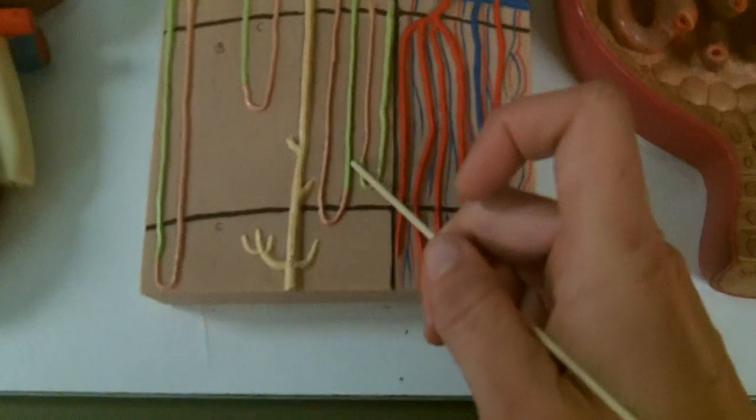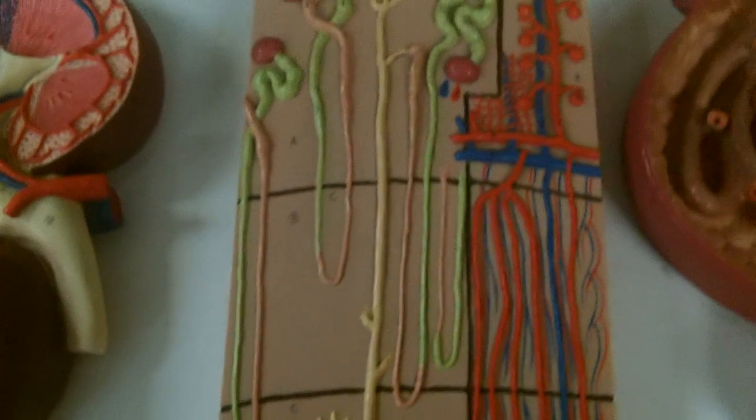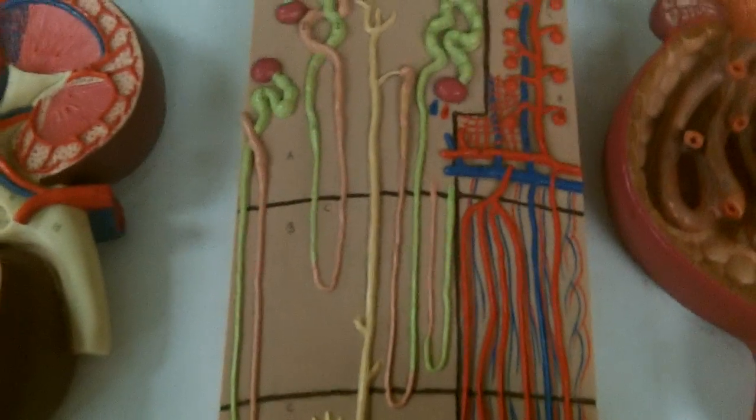This nephron which has a very long loop of Henle getting into the inner regions of the medulla is a juxtamedullary nephron.